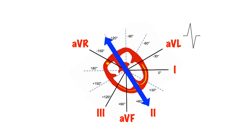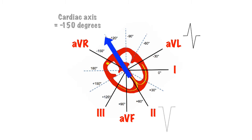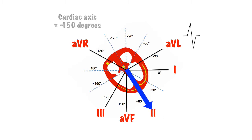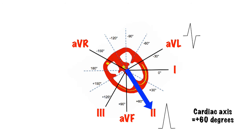Look at the lead that runs along this vector. If the impulse is travelling away from it, there will be a large negative deflection. If the impulse is travelling towards it, there will be a large positive deflection. Congratulations — you've just worked out the cardiac axis.